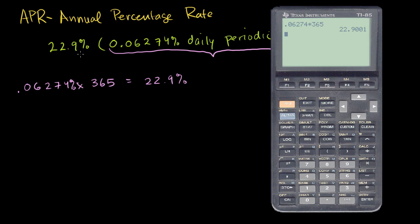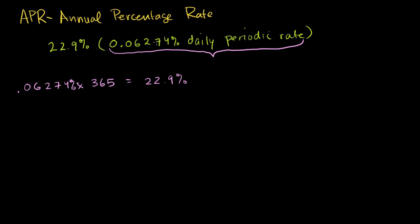My reply is that they're compounding this number on a daily basis. If you gave them $100 and let it ride for a year without paying, you wouldn't just owe $122.90.